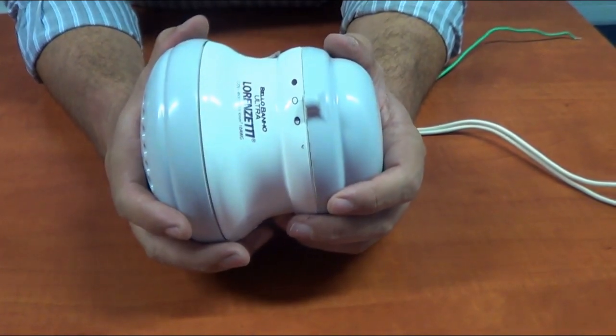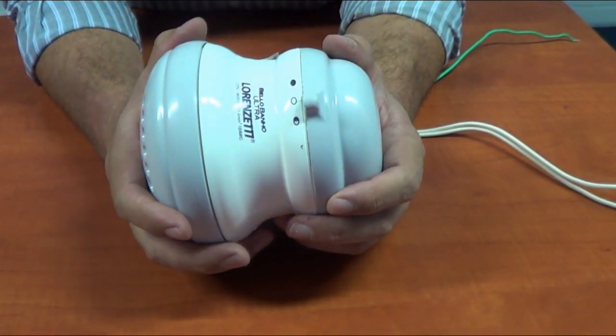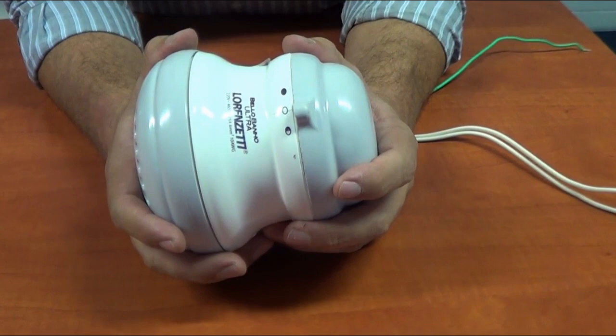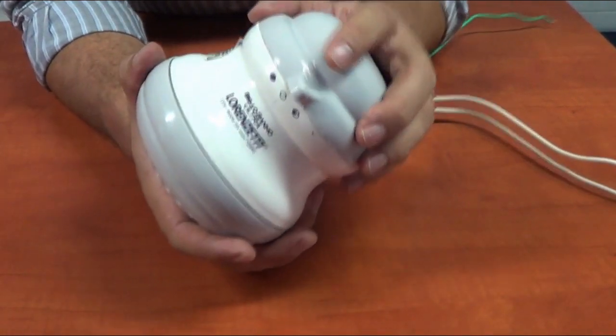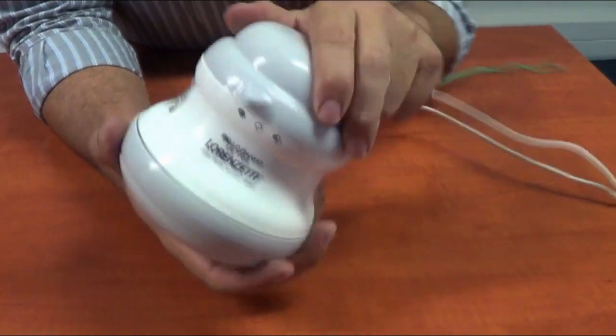In the Lorenzetti range we have two different types of temperature dials. On the Bellobanya Ultra, it's an analog switch, which basically means there's pre-determined heat settings. On this model you see we've got an off, a medium and a hot.